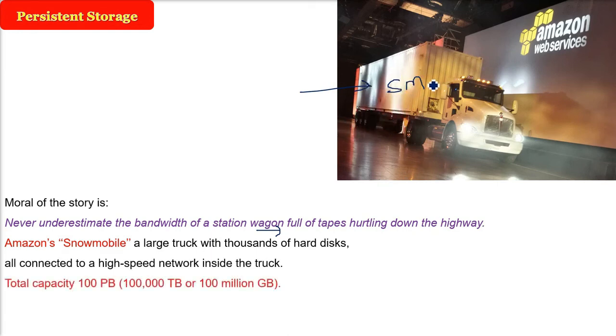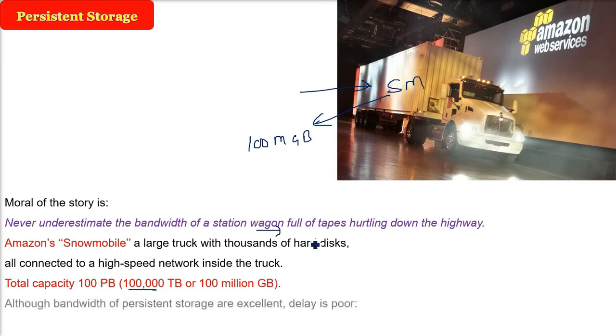The total capacity of this snowmobile is 100 petabytes. That is, 10 to the power 5 terabytes or you can call it as 100 million GB. You can imagine.